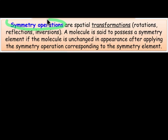Symmetry operations are the key to determining if a molecule possesses a particular symmetry element. Symmetry operations are actions carried out on a molecule — spatial transformations like rotations, reflections, and inversions. A molecule is said to possess a particular symmetry element if it is unchanged in its appearance after applying the symmetry operation that corresponds to that symmetry element.